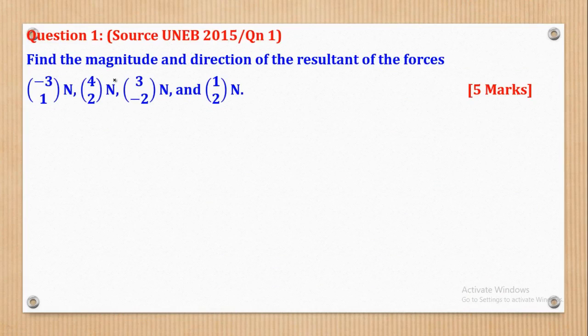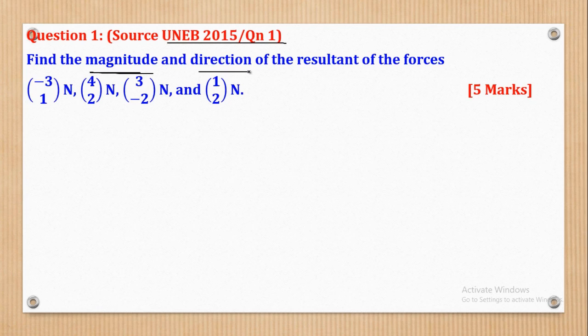Question 1 says find the magnitude and direction of the resultant of the forces. Question 1 came from UNEP 2015, paper 2, question 1. It says find the magnitude and direction of the resultant of the forces, and these are the forces given.